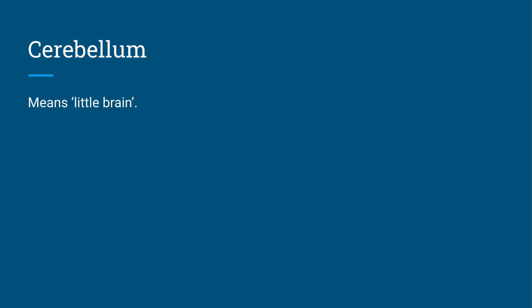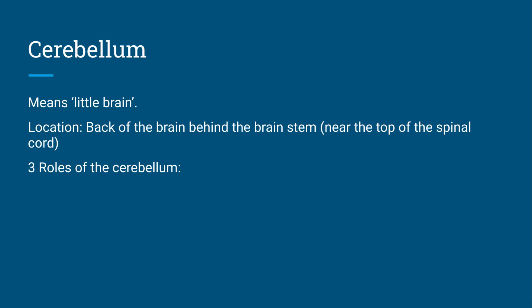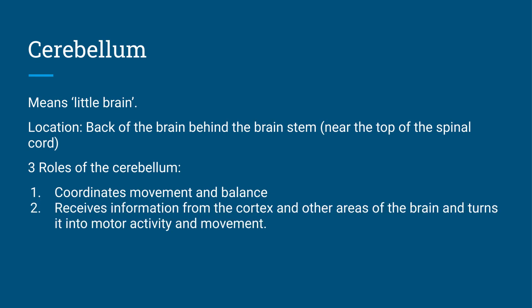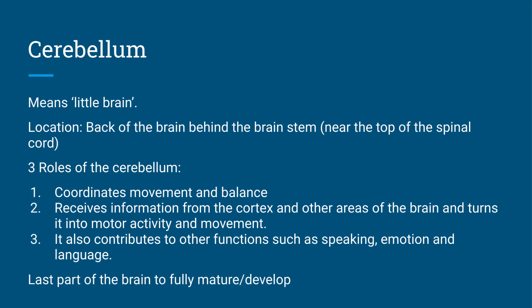Now we also have something called our cerebellum. The cerebellum is our little brain. Its location is at the back of our brain and it's behind our brain stem, so it's right near the top of the spinal cord. The cerebellum really has three main roles. Firstly, it coordinates movement and balance. It receives information from the cortex and other parts of the brain and turns that into movement and motor activity. And also it contributes to other functions such as speaking, emotion, language. It has a range of different roles. And again, it's one of the last parts of our brain to fully mature and develop.